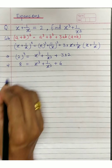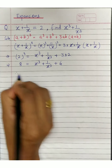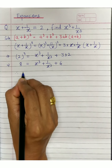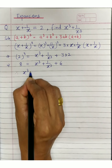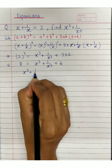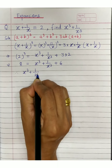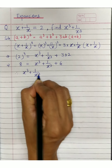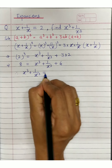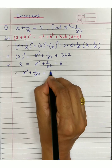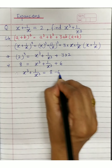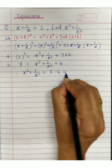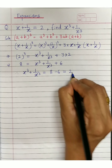Three 2s are 6. Therefore, x cube plus 1 upon x cube equals 8 minus 6, which is 2. That is our answer.